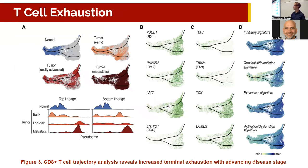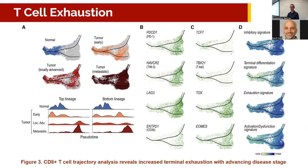Looking at the T-cell exhaustion progression, it's definitely the case that we see more T-cells from the adjacent normal samples in the early, non-exhausted phenotype. As we move to the right in the trajectory, we see more and more of the exhausted T-cell phenotype, especially in the metastatic samples.